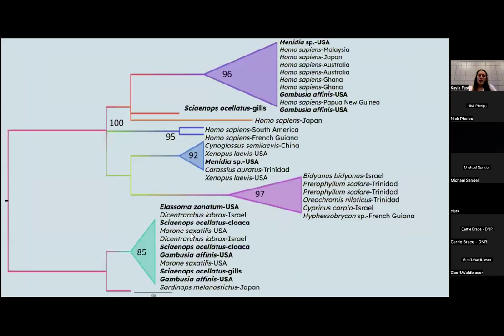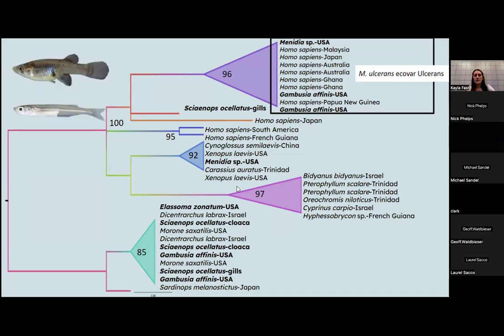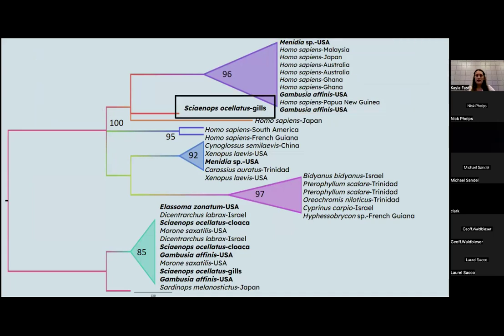And this is a maximum likelihood phylogenetic tree made with our plasmid sequences we determined and also some that were publicly available. So quickly I'll go through the different ecovars so far we have. This one here on the top is ecovar ulcerans. This is the ecovar that causes buruli ulcer in humans in the eastern hemisphere. But we've also found it in Gambusia affinis and Menidia. Next is a novel ecotype we isolated from a red drum from the Gulf of Mexico. While it's not part of a defined ecovar yet, what's interesting is that it's most closely related to the ecovars that are found in humans.